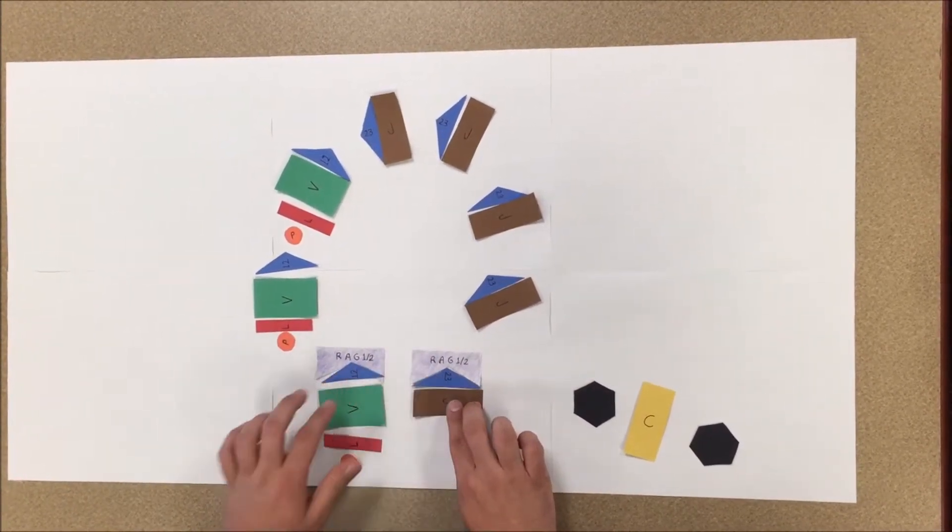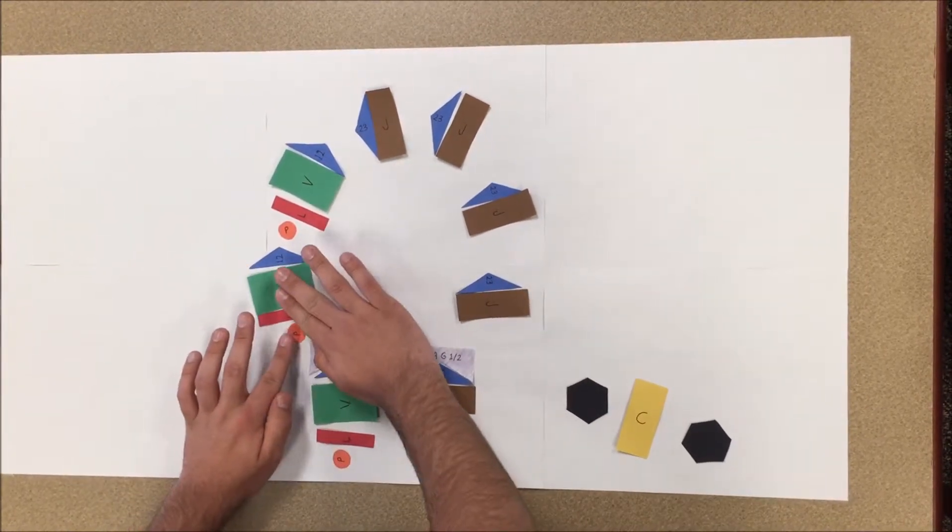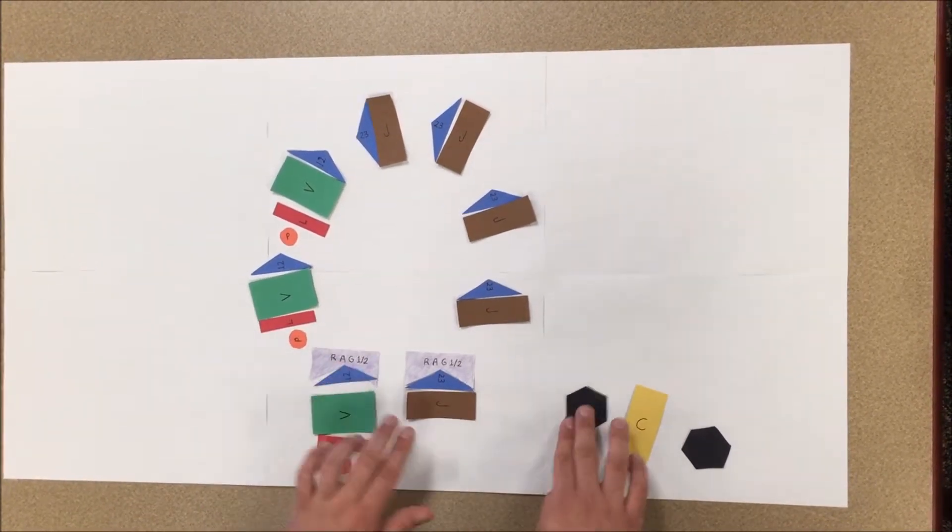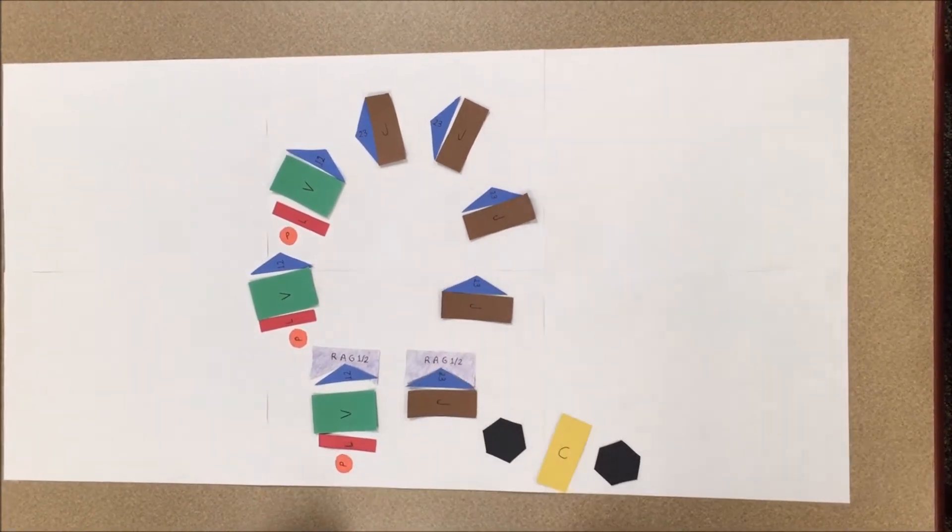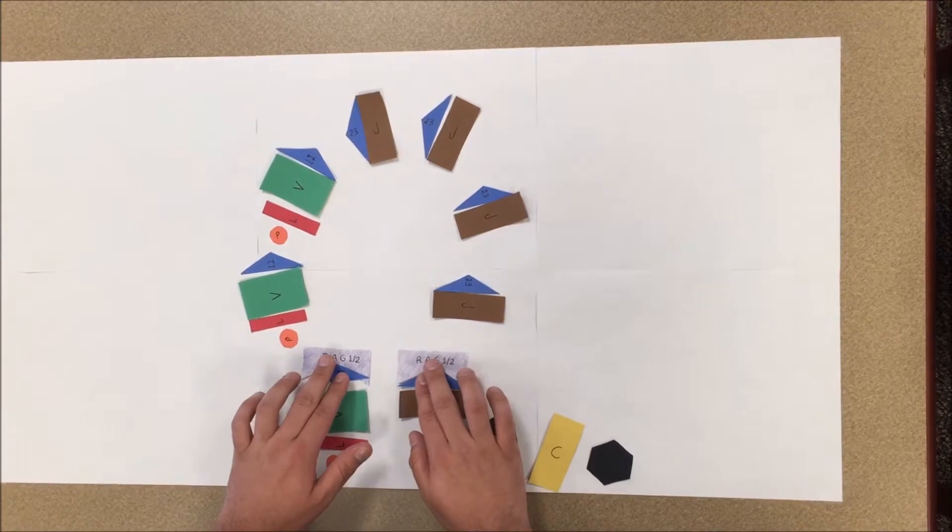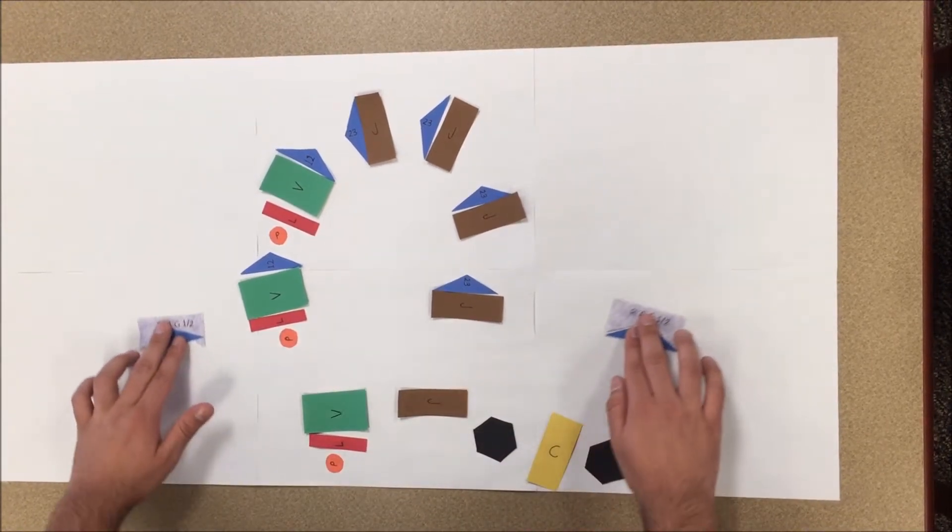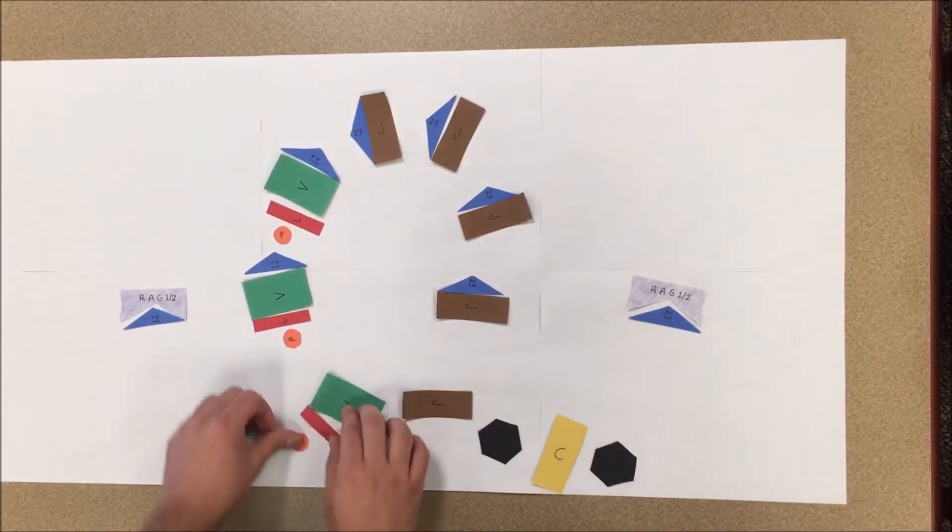The RAG1-2 recombinases bind the RSS region of the variable and joining regions. The RAG proteins bind to the RSS and cleave the DNA. Other proteins process hairpin loops after the RAG cleaves DNA.